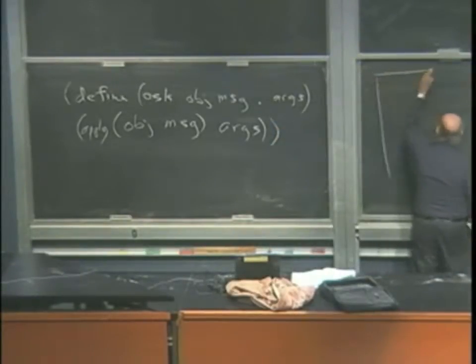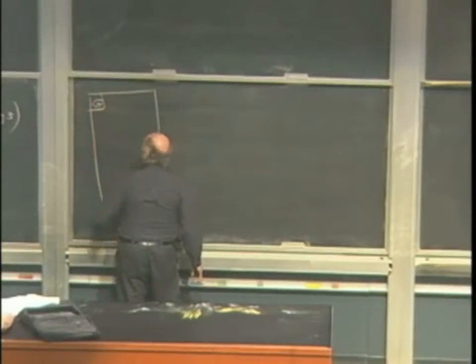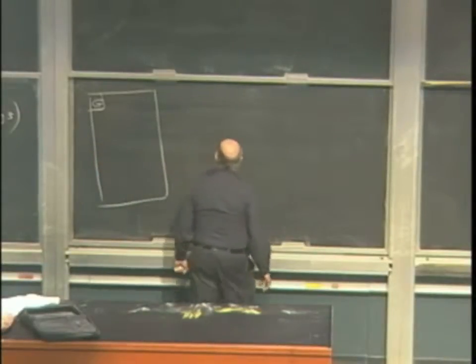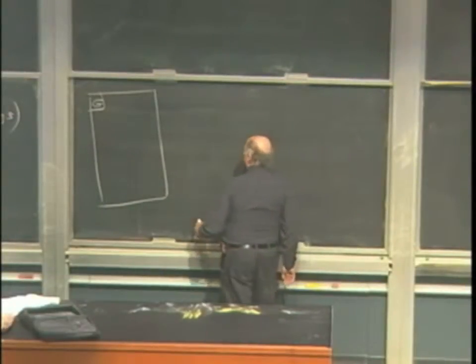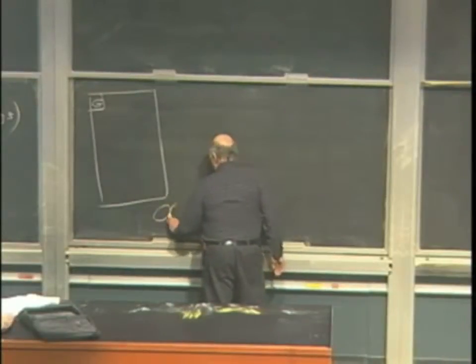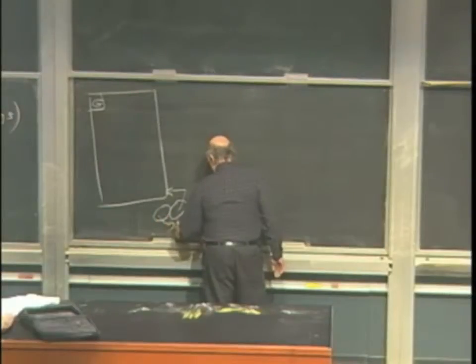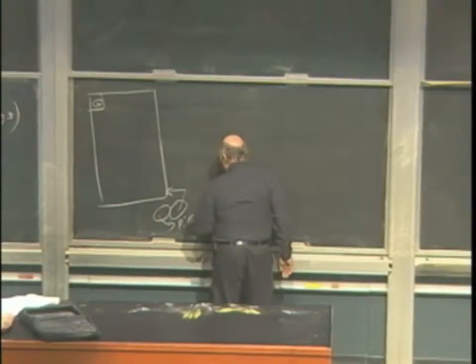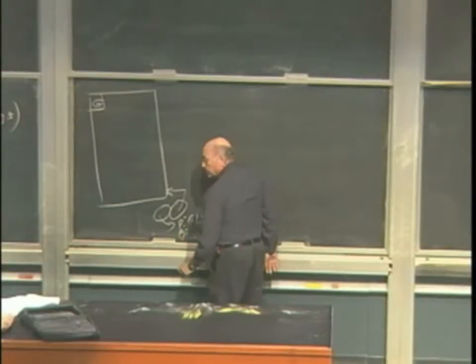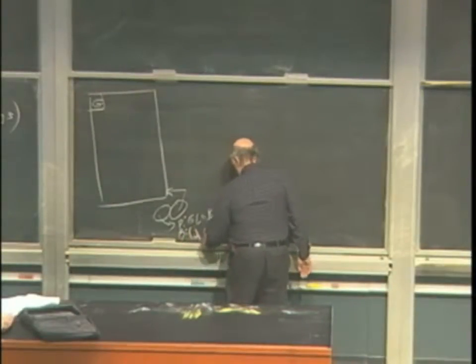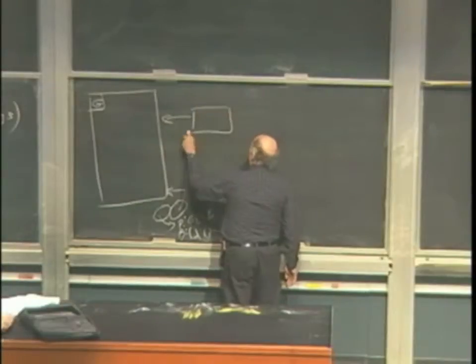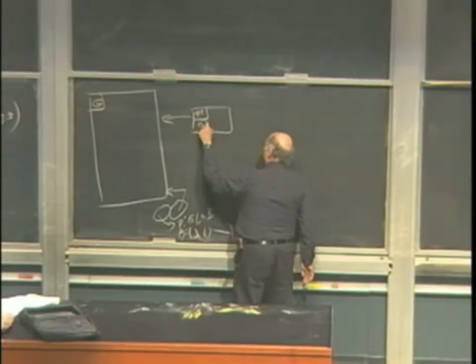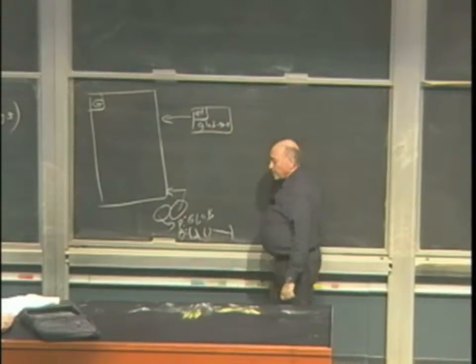So here's the global environment. Let glob creates a procedure and then invokes it. So I'm going to go ahead and create a procedure down here. Parameter glob and body is a lambda expression.